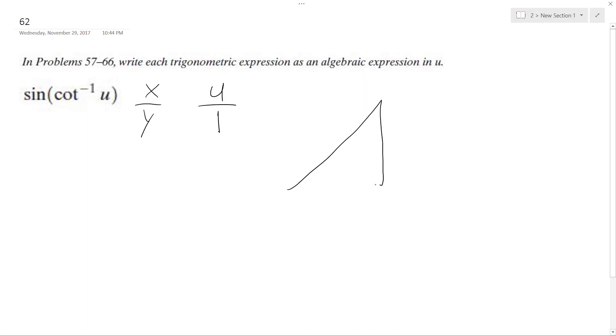So I'm going to draw my triangle here. x is going to be u, y is going to be equal to 1. So that means that the hypotenuse is going to be u squared plus 1, following the Pythagorean theorem.